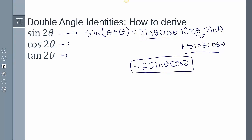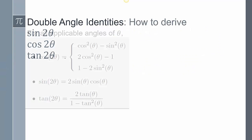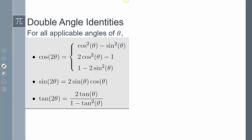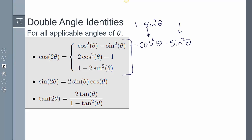Doing the same process for cosine and tangent gives us all our double angle identities. For cosine there are three possibilities. Starting with cosine²θ − sine²θ, we can use a Pythagorean identity to rewrite it as 1 − 2sin²θ, or change everything into cosines to get 2cos²θ − 1.